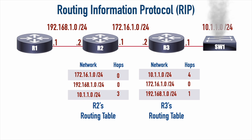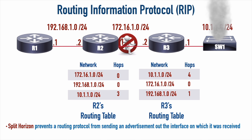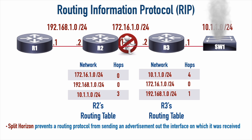To prevent count to infinity, RIP uses a mechanism called split horizon. Split horizon says: if a router receives a routing advertisement on a specific interface, it will not advertise that same route back out of that same interface. In this case, R2 received the advertisement for 10.1.1.0/24 on its right-side interface, so with split horizon in effect it will not advertise that route back out that same interface.